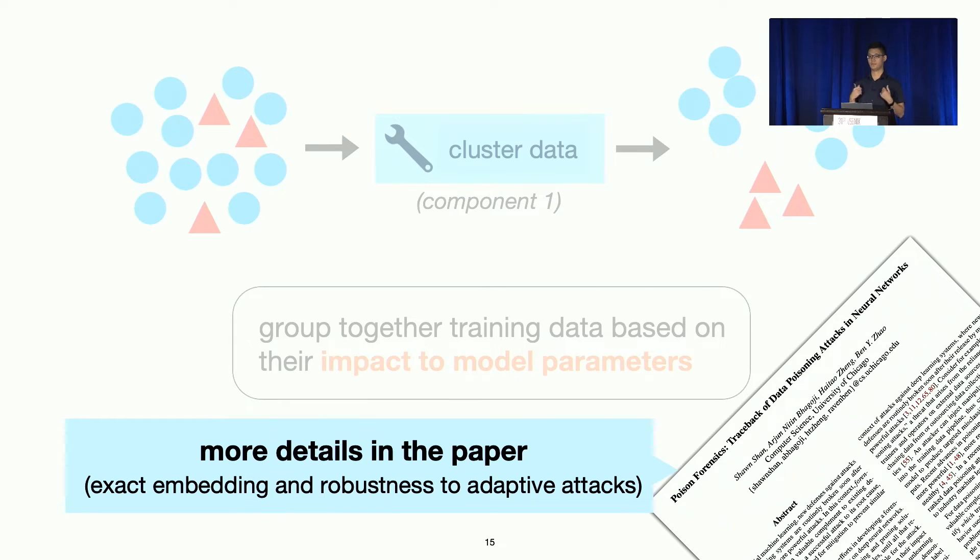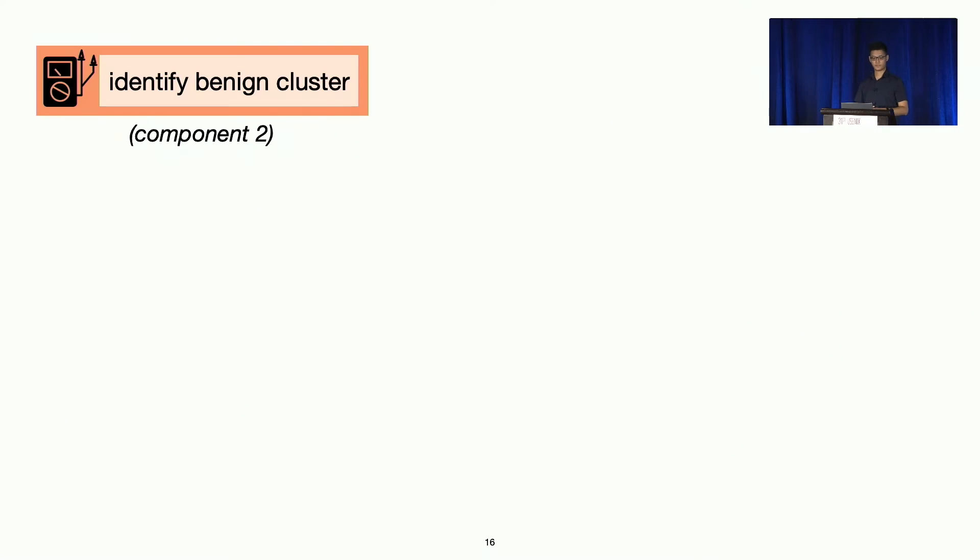Unfortunately, I really don't have time in this talk to talk about the exact embedding we used as well as its robustness to potential adaptive adversaries. But those are covered in the paper, so take a look if you're interested. Now the focus of the rest of this talk is going to be on the second component. How do we identify the benign cluster?